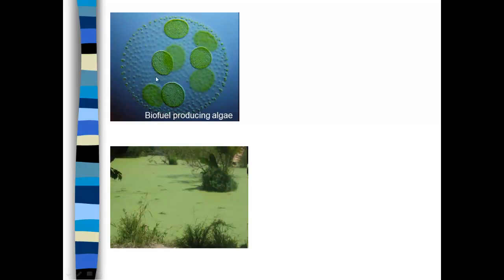Here's algae — this is a biofuel-producing algae called Volvox. And here is algae in a lake that's undergone eutrophication. Eutrophication happens when there's a release of nutrients like phosphate in a lake or a stream, and the nutrient causes rapid and very extensive growth of algae. The algae starves the aquifer of oxygen, and that causes other organisms like fish to die in the lake.